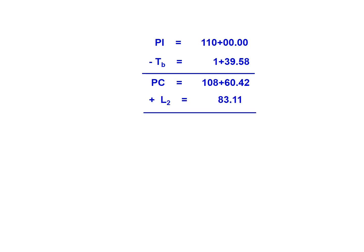Now we're going to add the length of the curve that comes first. The first curve in this case was L2. We're going to add 83.11 feet to get a point of compound curvature of 109 plus 43.53. Now we're going to add the second curve, which was L1, which is 2 plus 19.36, to give us the PT station of 111 plus 62.89.